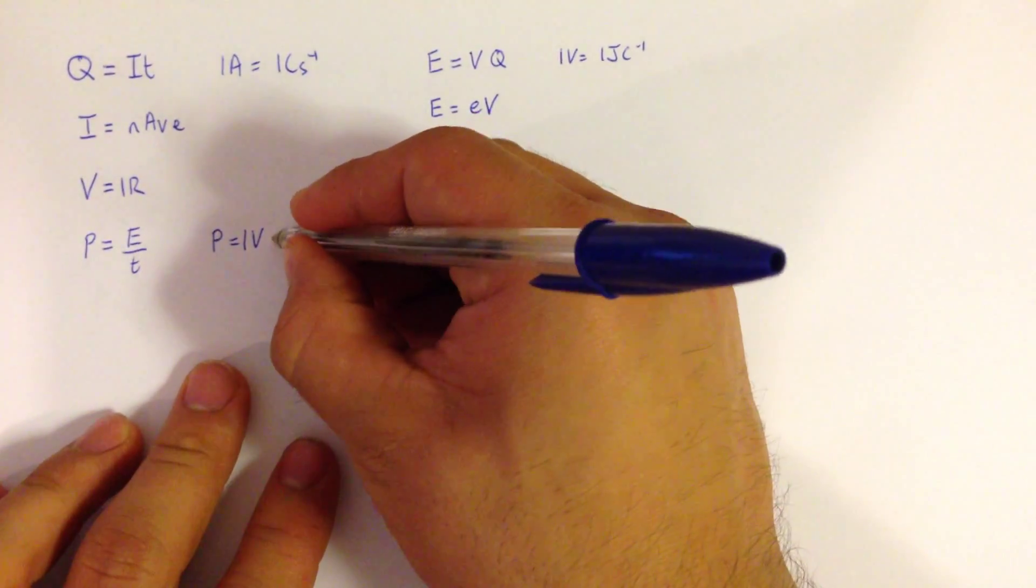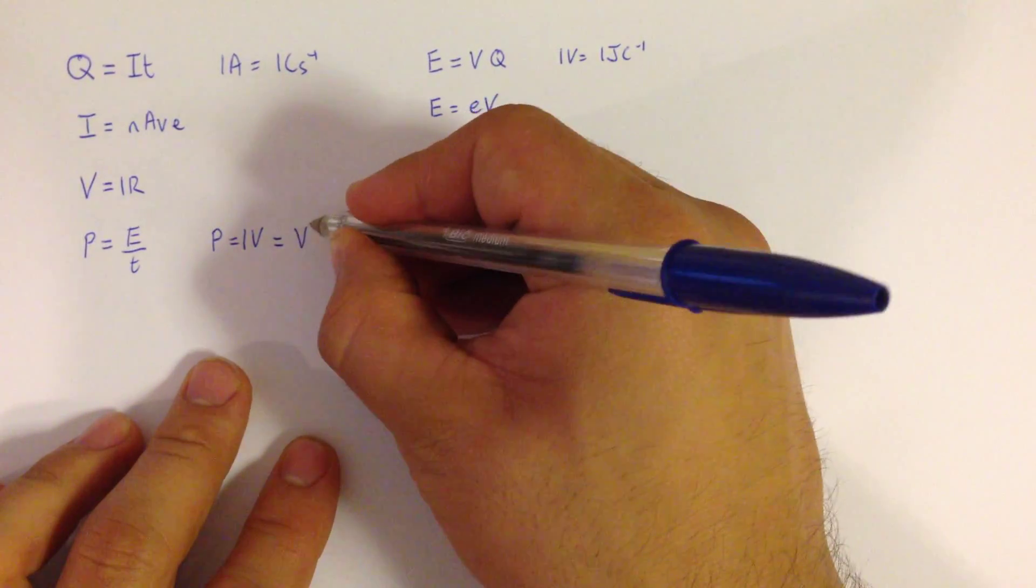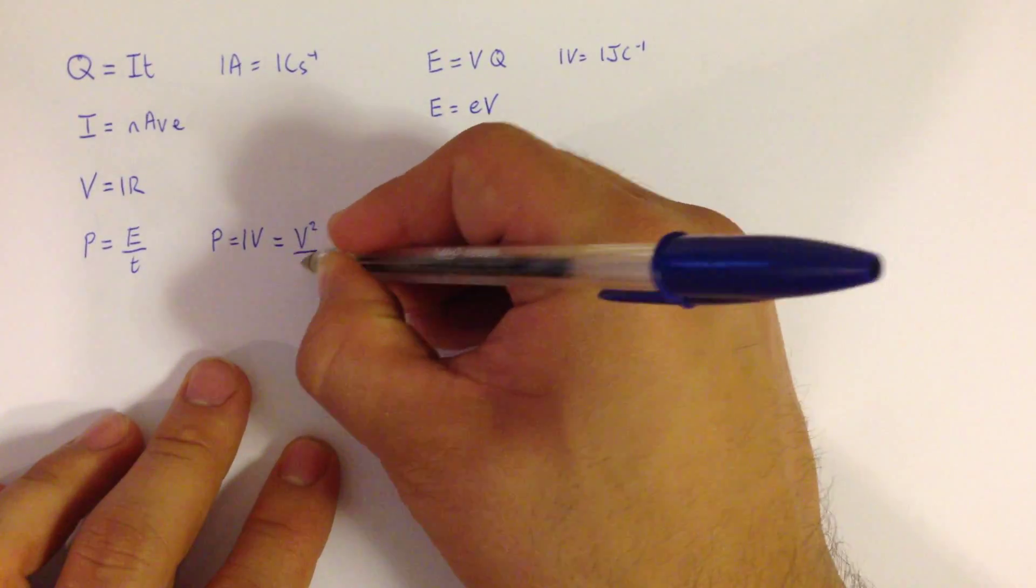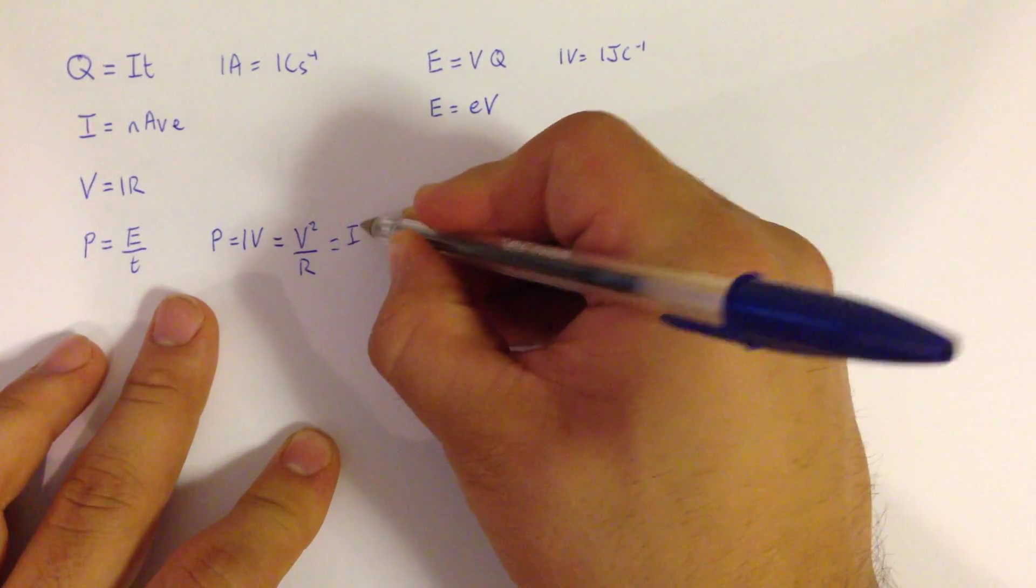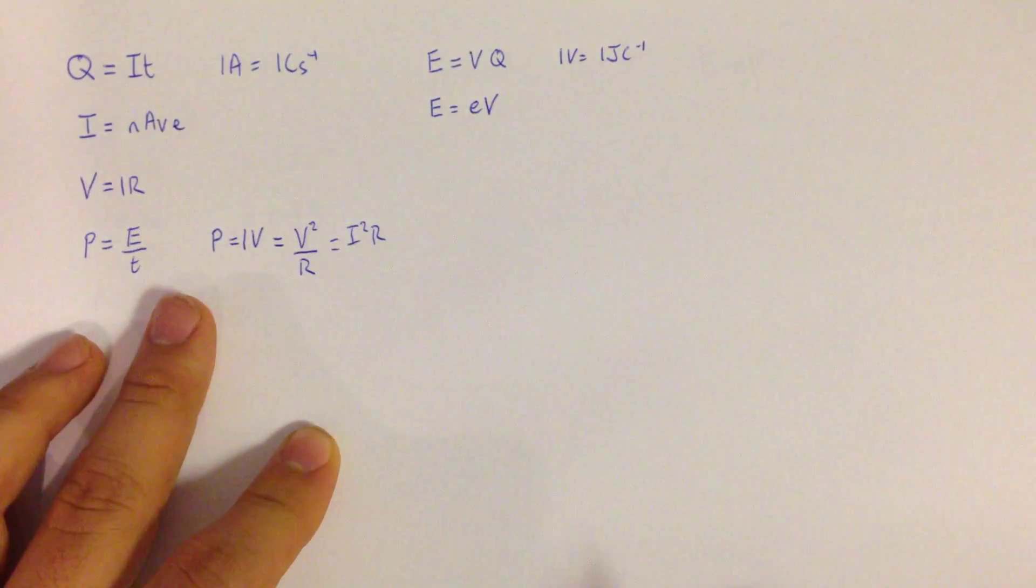And then by substituting in Ohm's law for I and V, we get two more expressions for this, which is that voltage squared over R is equal to power, that's when we substitute in for I, and also I squared R, when we substitute in for V.